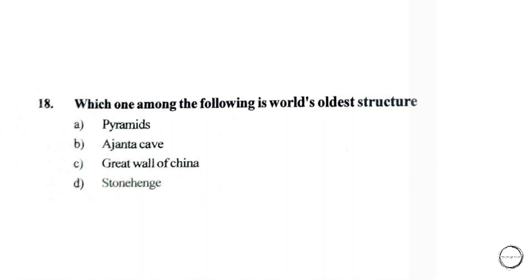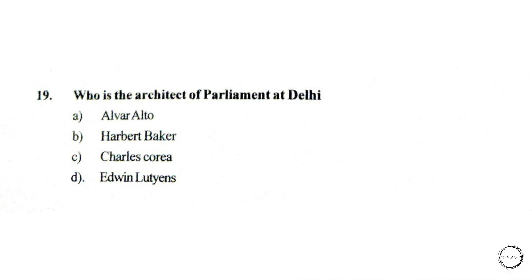Moving on, which one among the following is the world's oldest structure? Options are: A) Pyramids, B) Ajanta Cave, C) Great Wall of China, D) Stonehenge. The right answer is option D, Stonehenge.